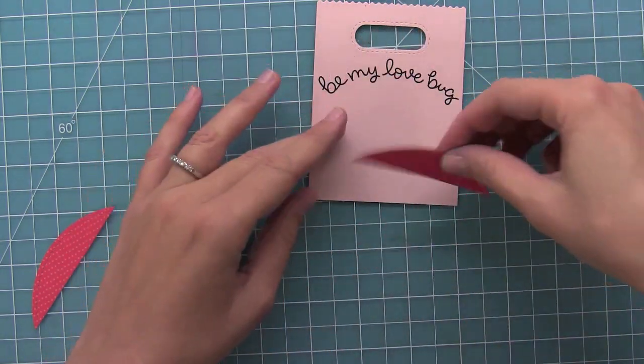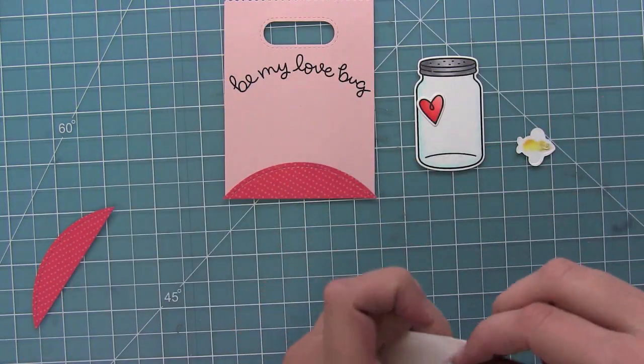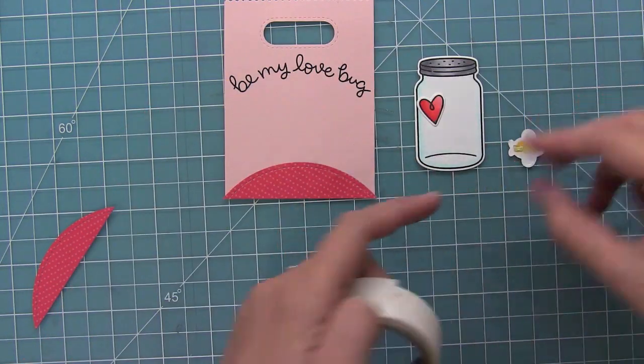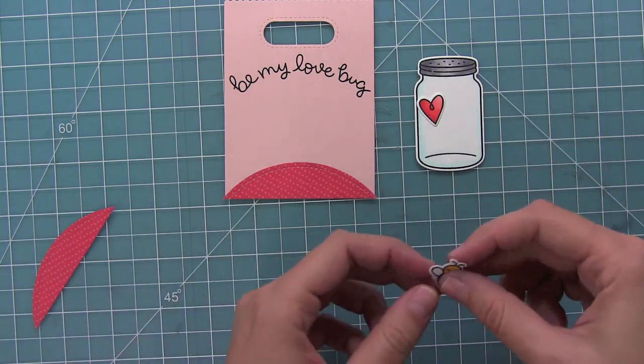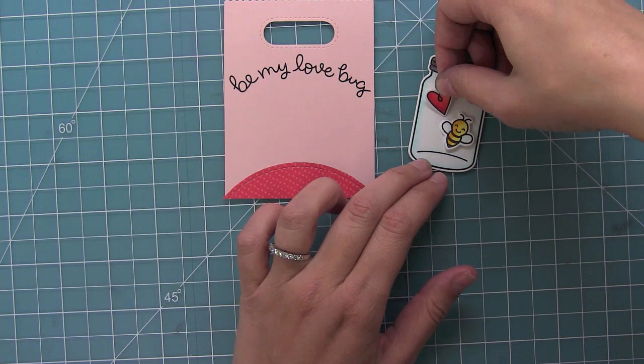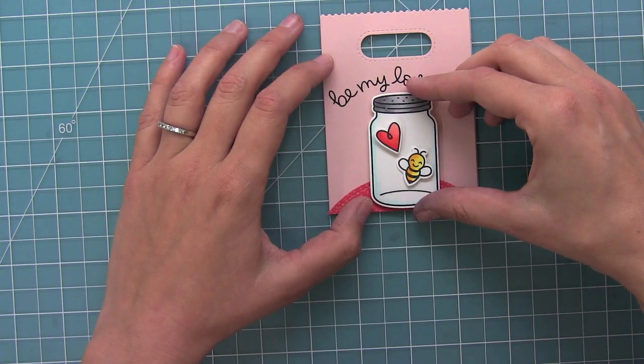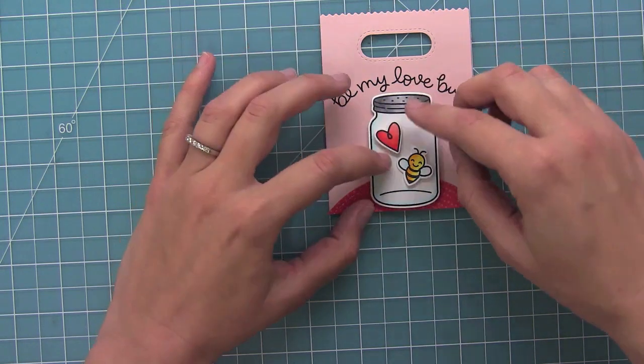So I'm going to go ahead and adhere that to the goodie bag and then I can add my cute little bee here. I'm going to add with some glue dots to my jar and then I'll add the heart with some foam adhesive. I really wanted that heart to stick out and then I can add the jar with foam adhesive right onto my panel.